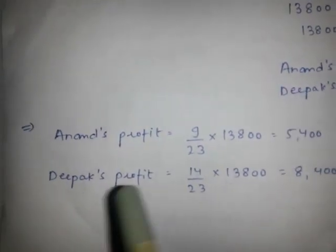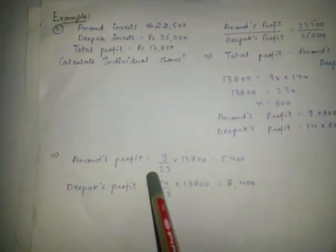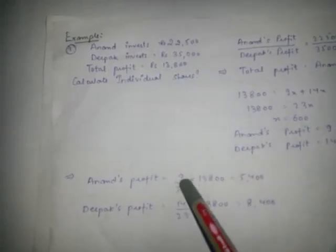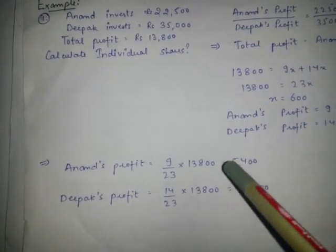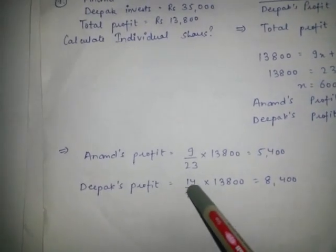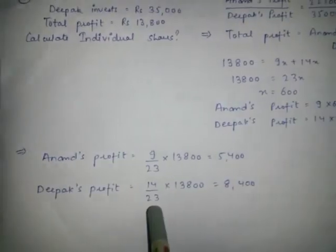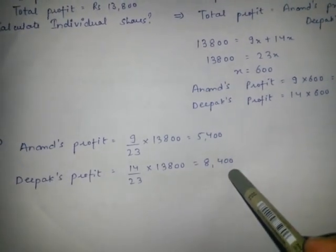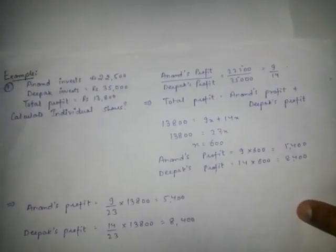Alternatively, using the shortcut of ratio and proportion: Anand's profit equals his ratio value (9) divided by the total ratio value (23), multiplied by the total profit. Similarly, Deepak's profit equals his ratio value (14) divided by the total ratio value (23), multiplied by the total profit. This gives us Deepak's share.